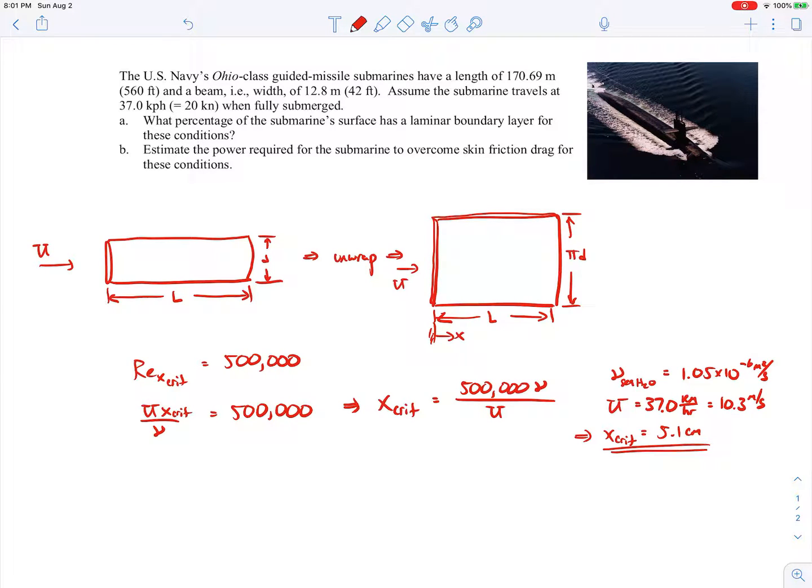It's a very short distance. Remember that this full length over here is 170 meters. So in terms of percentages, the critical length over the full length of the submarine, so it's 0.051 meters over 170.69 meters, it comes out to be 0.030 percent. So it's just a small, small fraction of the submarine surface has a laminar boundary layer flow.